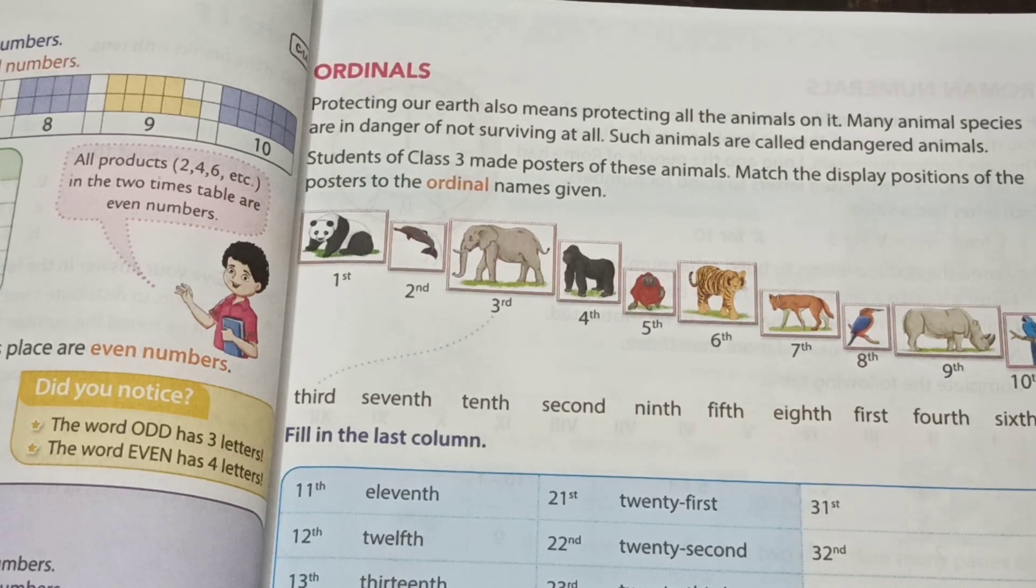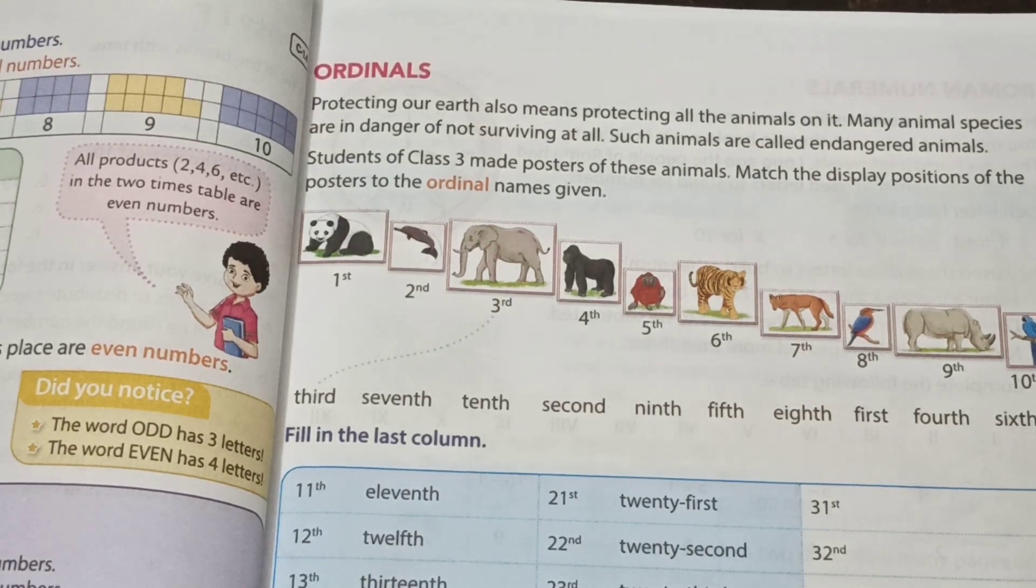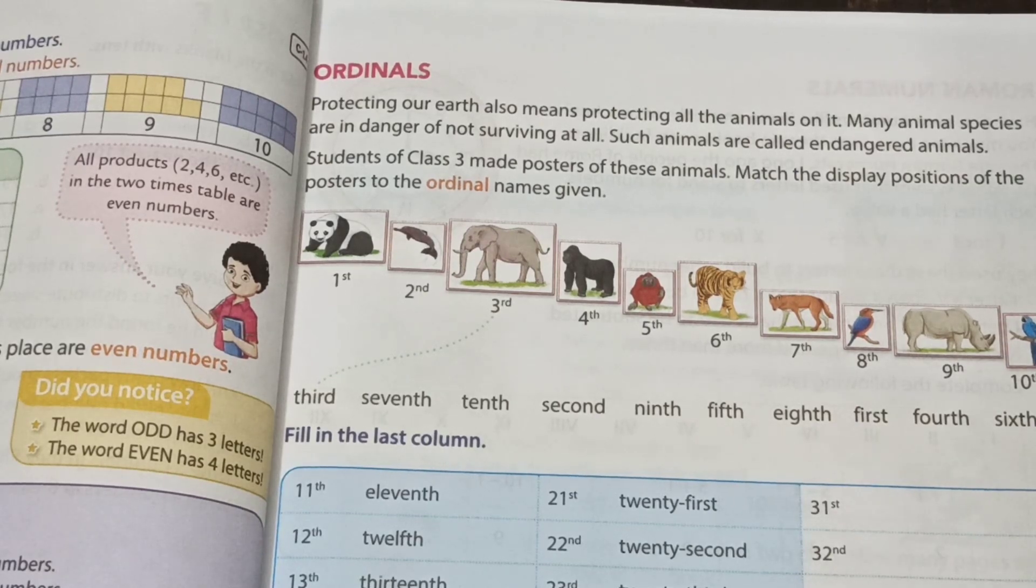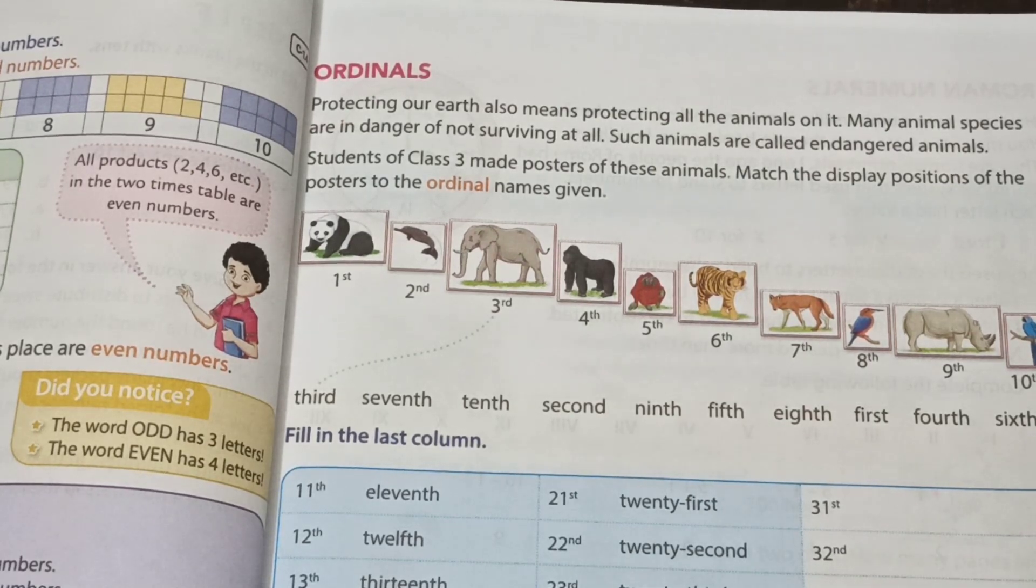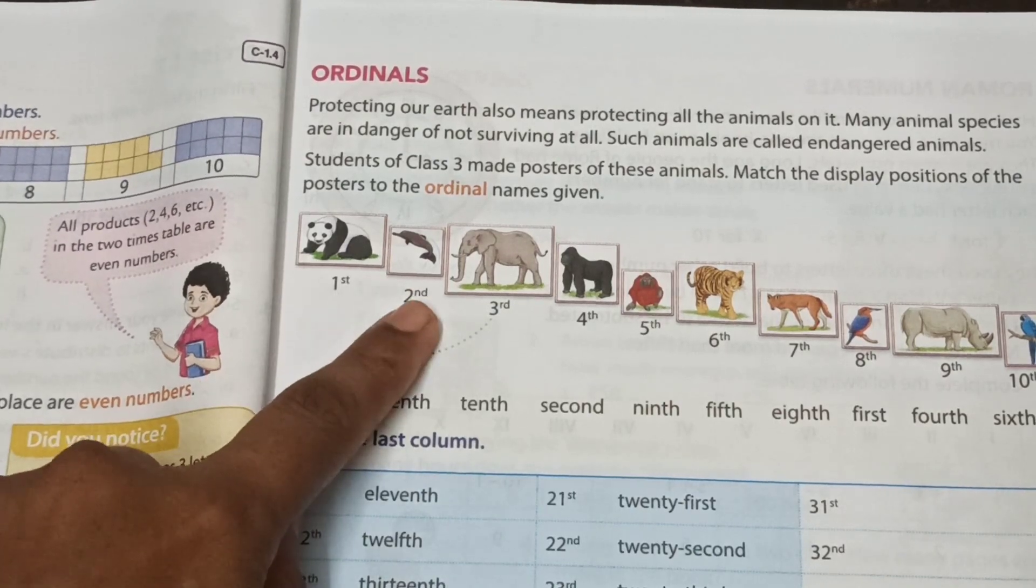Protecting our earth also means protecting all the animals on it. Many animal species are in danger of not surviving at all. Such animals are called endangered animals. Students of class 3rd made posters of these animals. Match the display positions of the posters to the ordinal names given. You can see here: first one bear, second one fish, third one elephant.